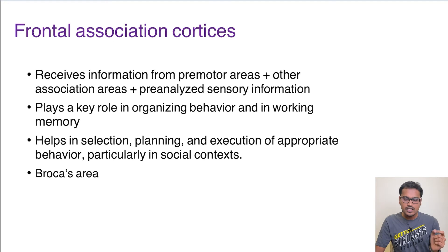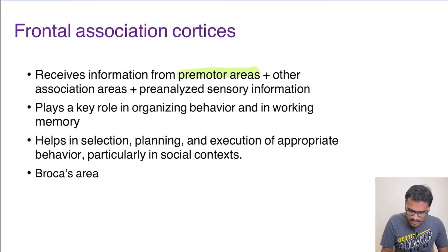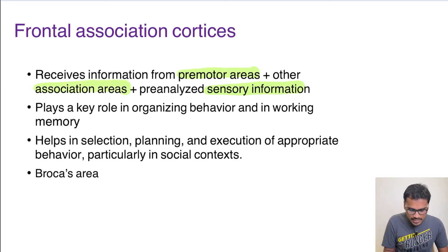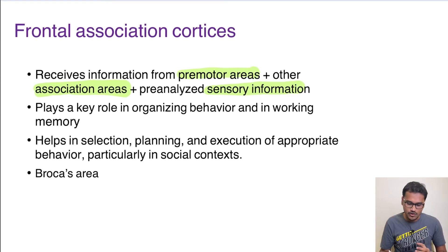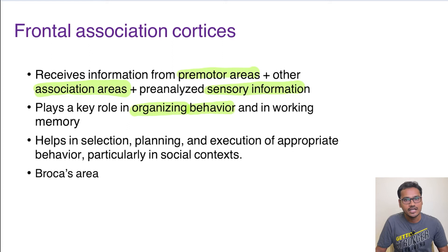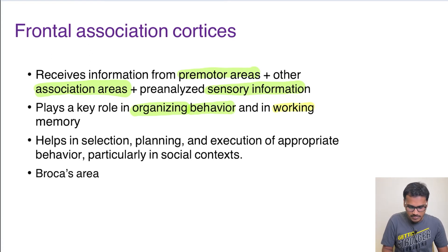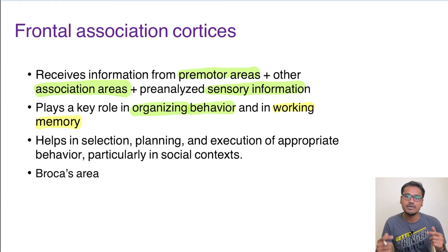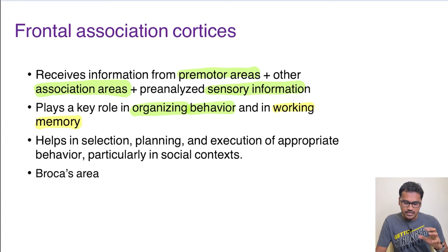The frontal association cortex receives information from the motor areas, sensory areas, and other association areas. Using all this input, it forms behavioral patterns and determines the behavior of the person. It is also involved in working memory — for example, when you remember an OTP and keep repeating it mentally until you type it into your phone. These are the main functions of the frontal association cortex.